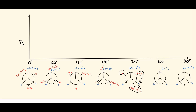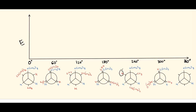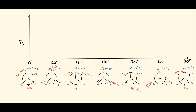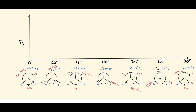Moving 60 degrees again gives the eclipsed conformer at 300 degrees, where the hydrogen is behind the blue tert-butyl group, the isopropyl group is behind a blue hydrogen, and the methyl group is behind a blue hydrogen. Finally, at 360 degrees we get back to where we started.